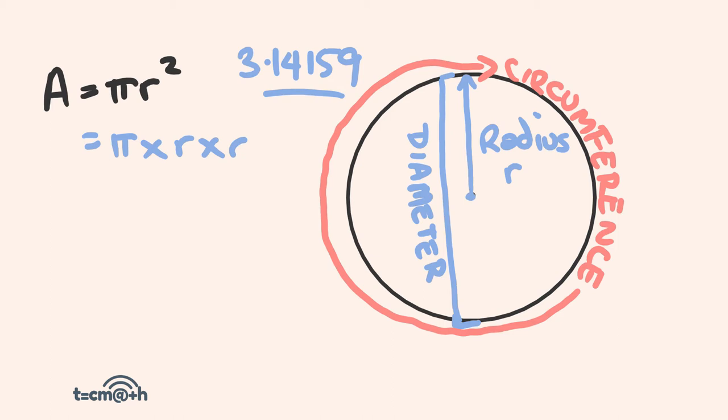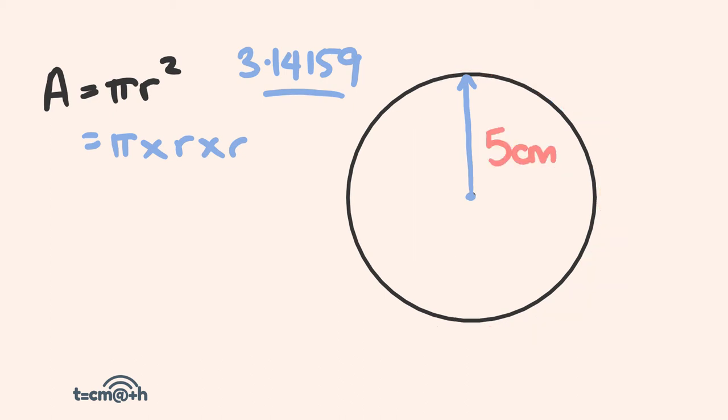So say for instance we have a circle here and we want to work out its area, and we know that the radius is equal to five centimeters from the center to the edge. How are we going to work it out? Well it's pretty simple—we're going to follow area equals pi r squared. This formula will come through again and again, and if you can remember this formula, everything's pretty good.